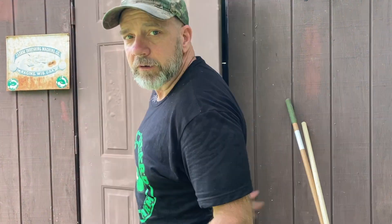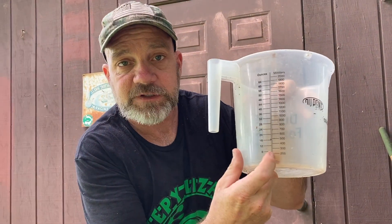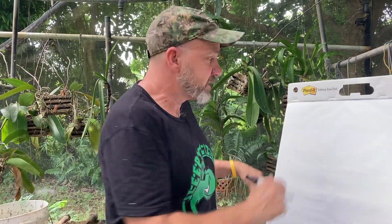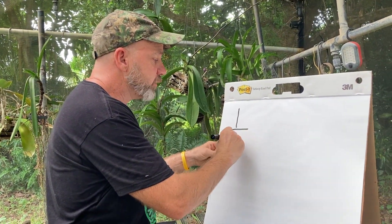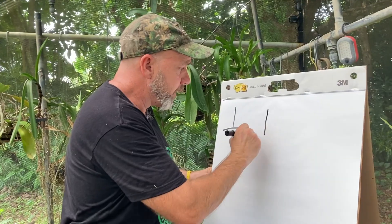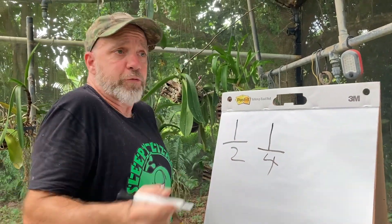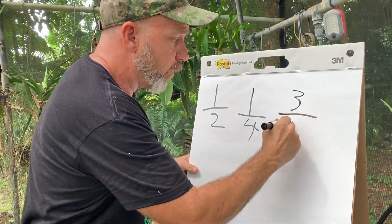We all know what a ratio is — it's a comparison of one number to another. One over two is the ratio we know as one half. We work with ratios all the time: you use x units of soil to y units of perlite, for example. You mix your chemicals and concoctions to a ratio — x ounces of chemical to y ounces of water. Just like the ratio a half is one over two, or a fourth is one over four, or three-fifths is three over five.